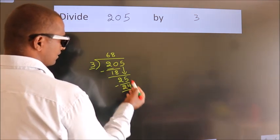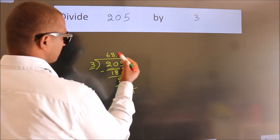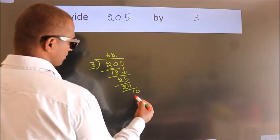After this, no more numbers to bring down. So what we do is we put a dot, take 0. So 10.